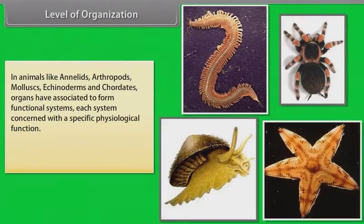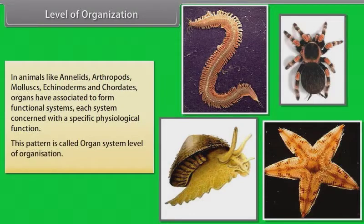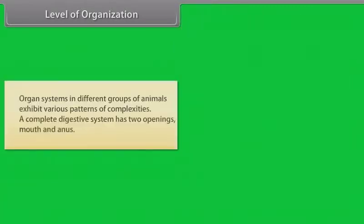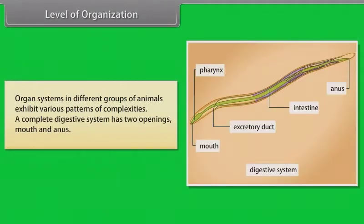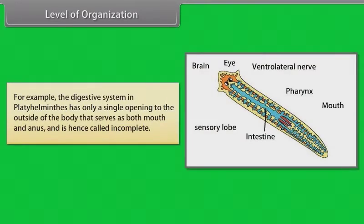In animals like annelids, arthropods, mollusks, echinoderms and chordates, organs are associated to form functional systems. Each system is concerned with a specific physiological function — this pattern is called organ system level of organization. Organ systems in different groups exhibit various patterns of complexity. A complete digestive system has two openings: mouth and anus. For example, the digestive system in Platyhelminthes has only a single opening that serves as both mouth and anus, and is hence called incomplete.